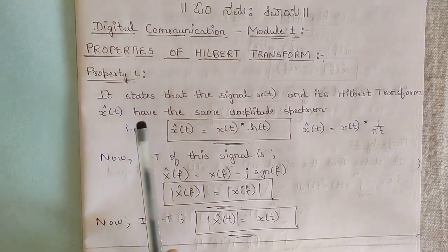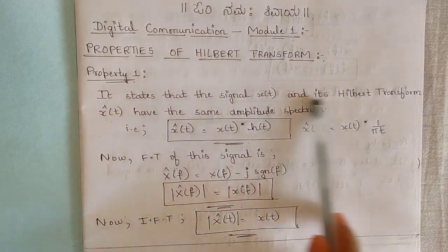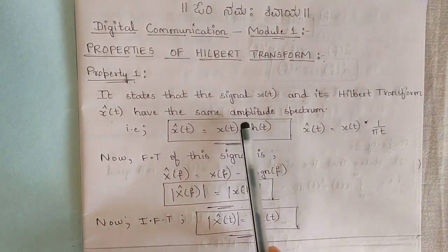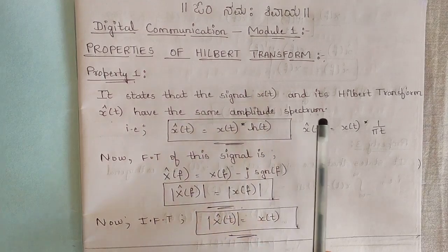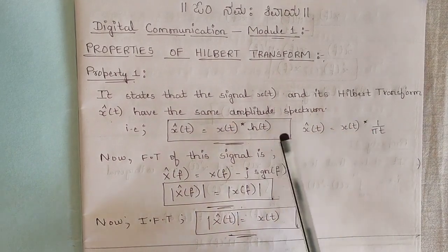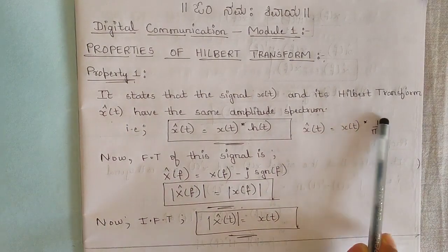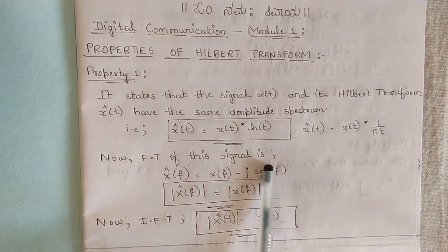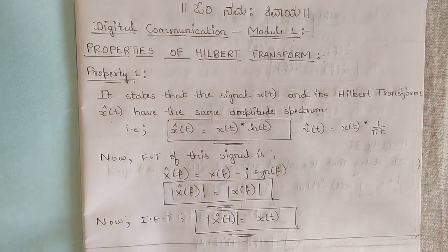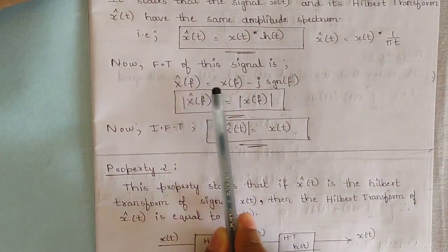The first property states that the signal x(t) and its Hilbert transform x̂(t) have the same amplitude spectrum. Mathematically, x̂(t) = x(t) * h(t), where x̂(t) can also be written as x(t) convolved with 1/πt. Taking the Fourier transform of the signal, we get x̂(f) in the frequency domain.